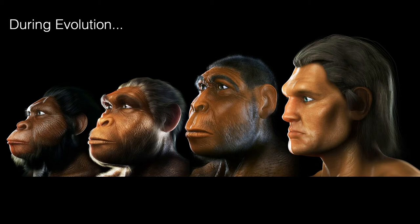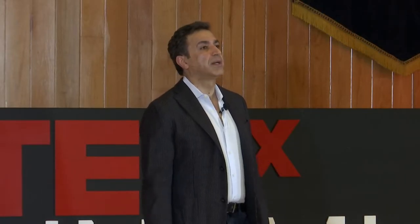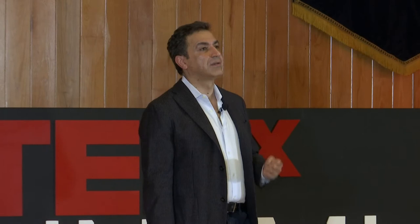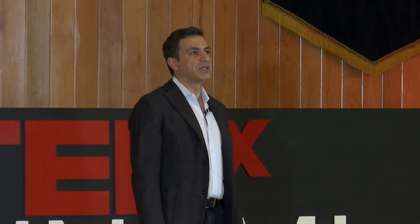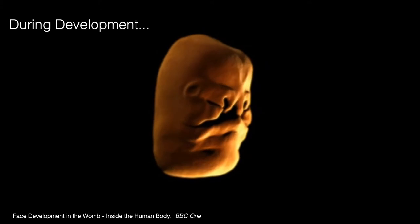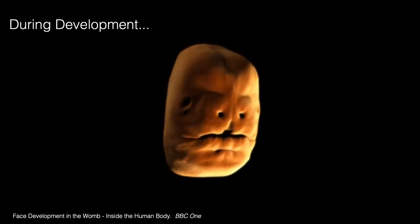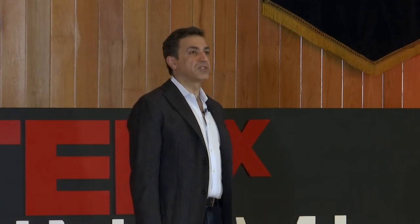Any time our forebrain changed, our forehead changed. When we started to have processed food, our jaws changed. When we started to be social animals and communicate with each other, our face changed — became much smoother. But these changes were not only limited to evolutionary changes. During embryonic life, we are constantly changing as the soft tissue changes. We can do an experiment to see how important soft tissue is: if you paralyze the muscles during embryonic life, the skeleton changes significantly.